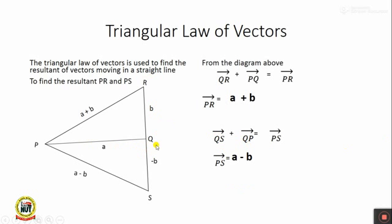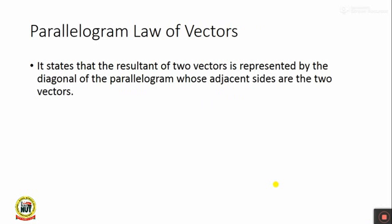Similarly, Q,S plus Q,P gives another combination, where Q,S equals minus B. So P,S equals A minus B, because B is the negative vector of vector B. In summary, when two vectors move on a straight line in the same direction, the resultant is A plus B. When they move in opposite directions on a straight line, the resultant is A minus B.